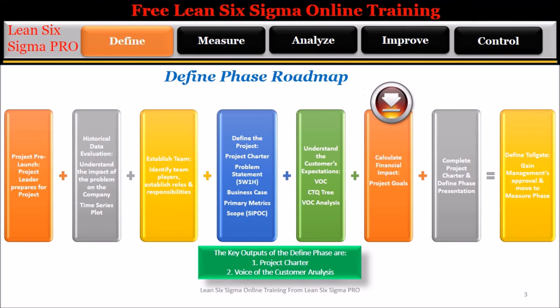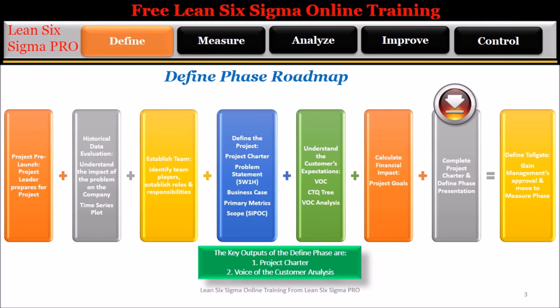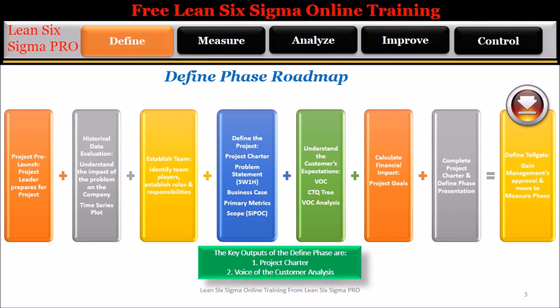Step 6: Calculate financial impact based on the goals set by the team identified using the historical data. Step 7: Complete the project charter and the define phase presentation. Step 8: Define tollgate — gain management's approval and move to the measure phase. The key outputs of the define phase are: 1. Project Charter, and 2. Voice of the customer analysis.